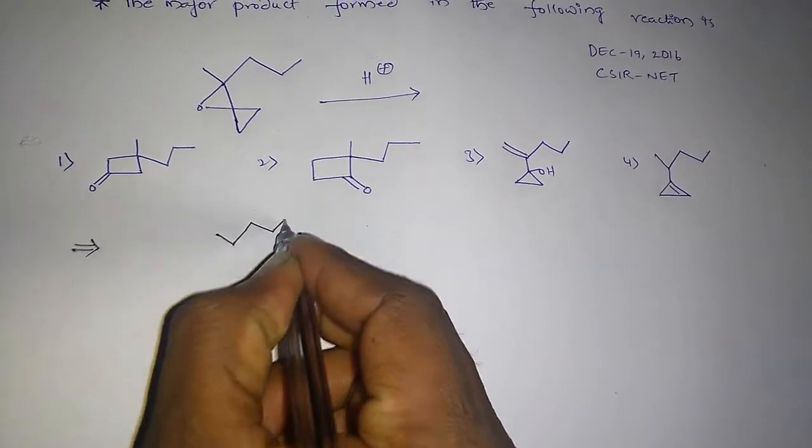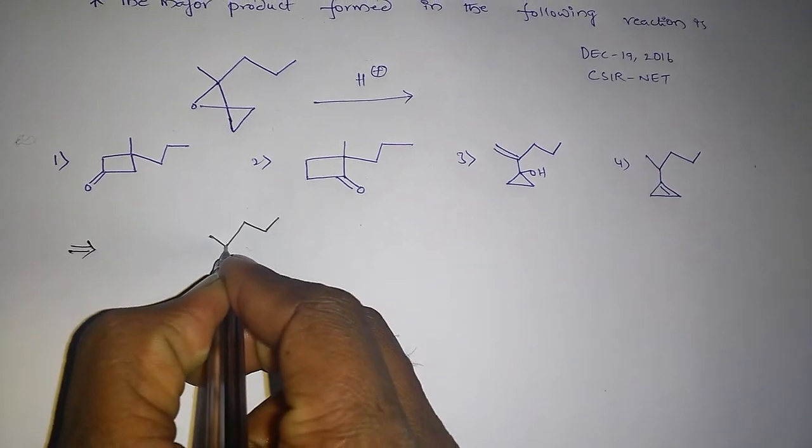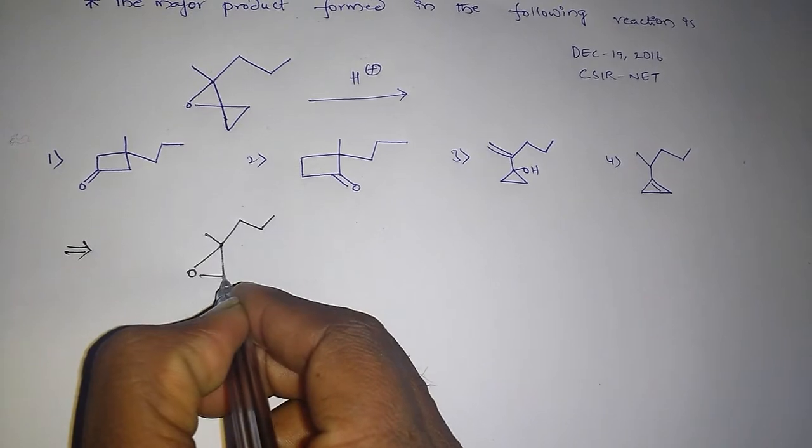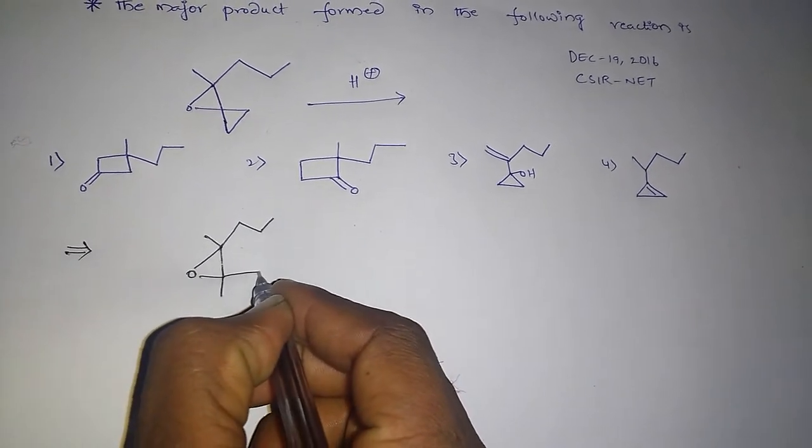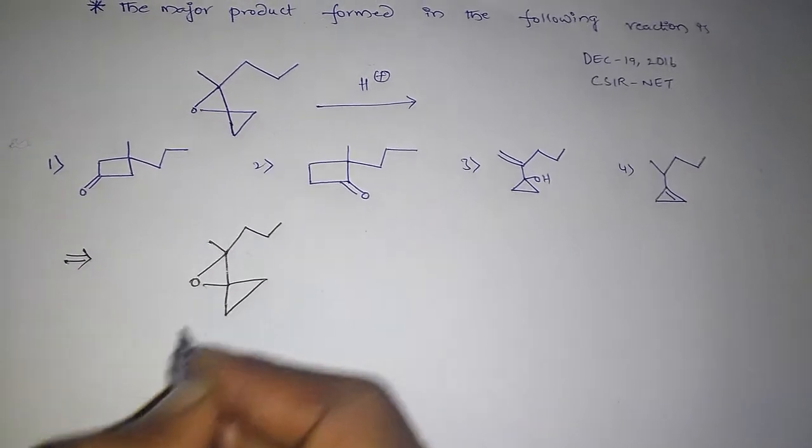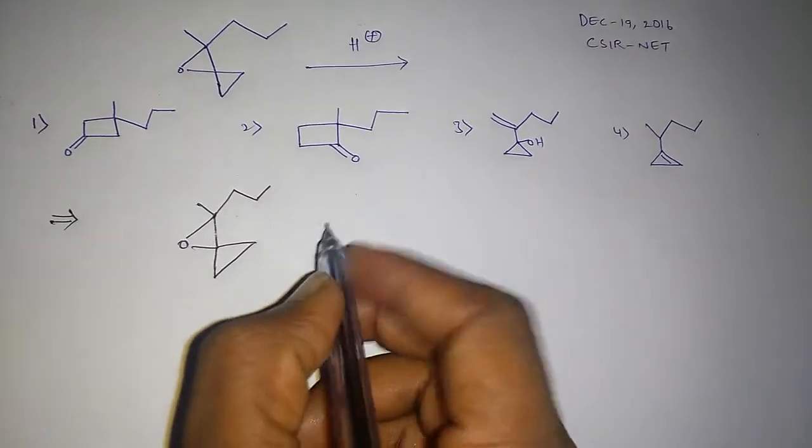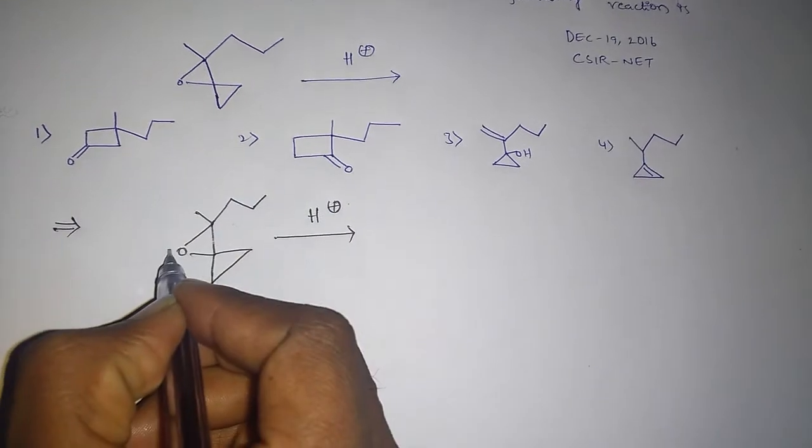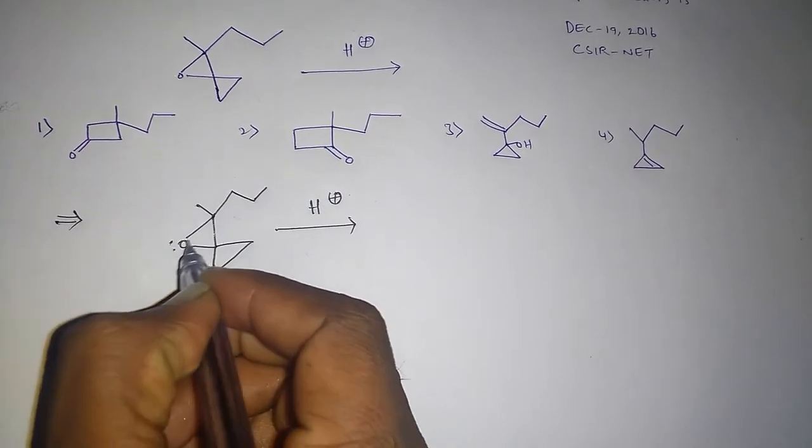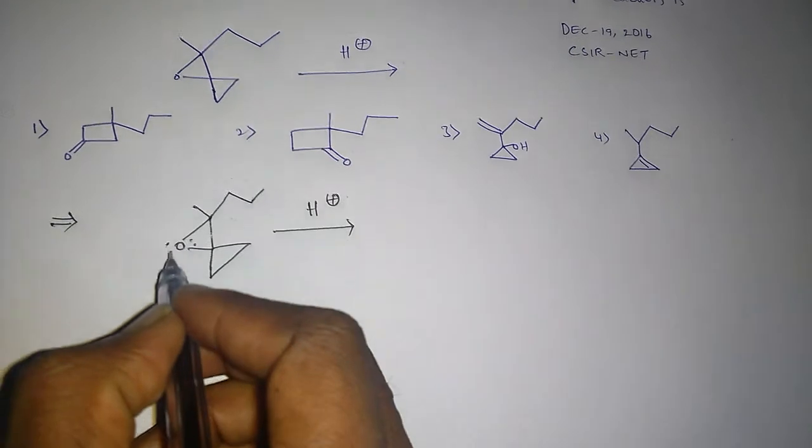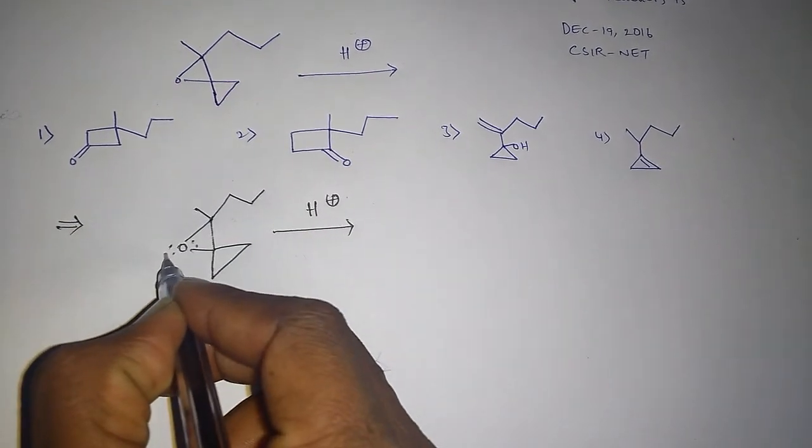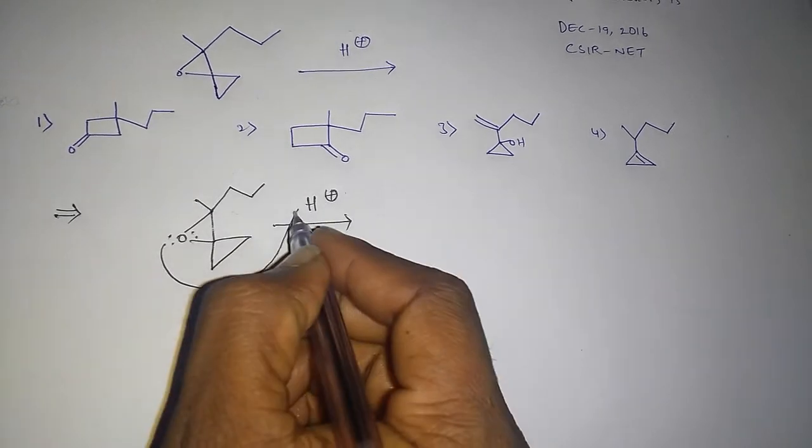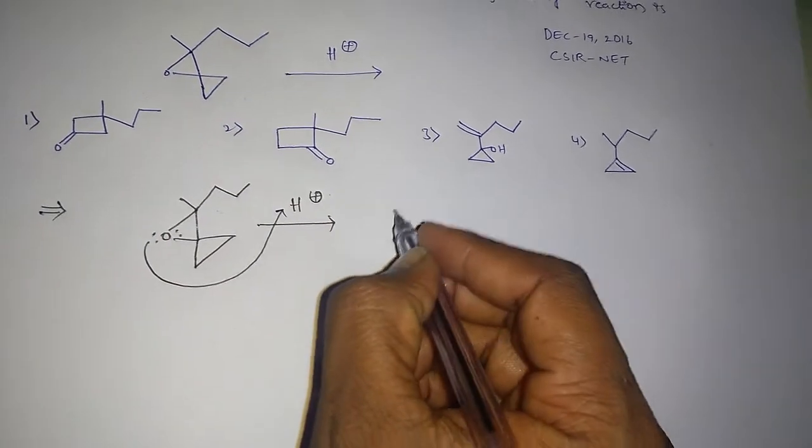I am writing the reactant here. And this on protonation, so this oxygen has lone pair of electrons on it, and these lone pairs of electrons abstract H plus.